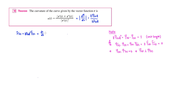Then to find r''(t), we take another derivative with respect to t and apply the product rule. The derivative of ds/dt gives us d²s/dt², multiplied by the tangent vector T, plus ds/dt times the derivative of the tangent vector T'(t).